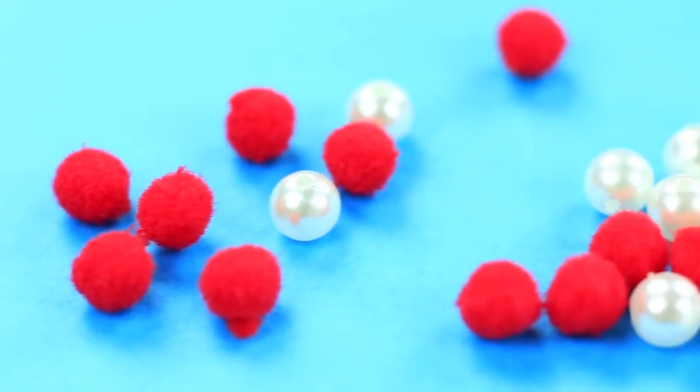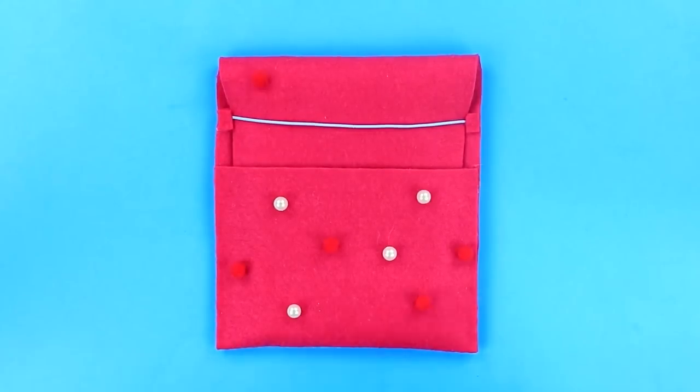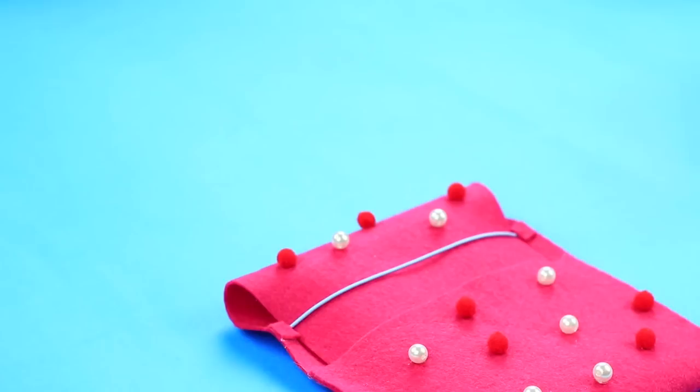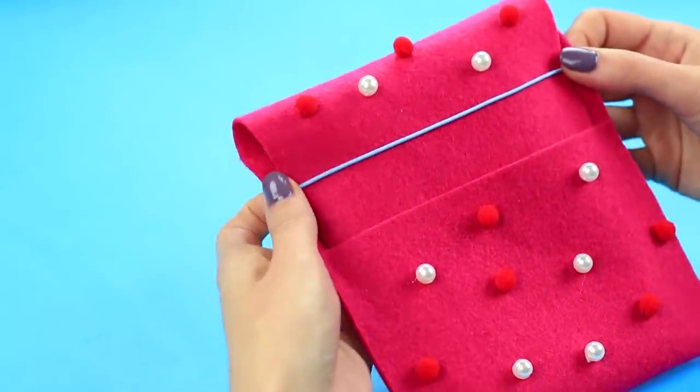Embellish the case with soft and pearl beads. Hot glue randomly on the front part. Keep your felt tip pens in a cute practical case.